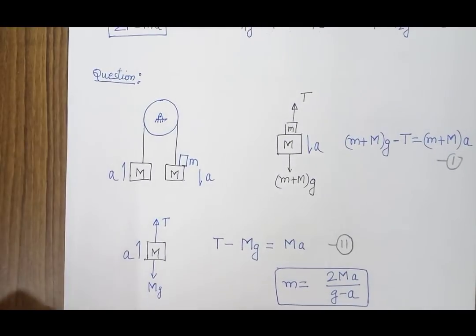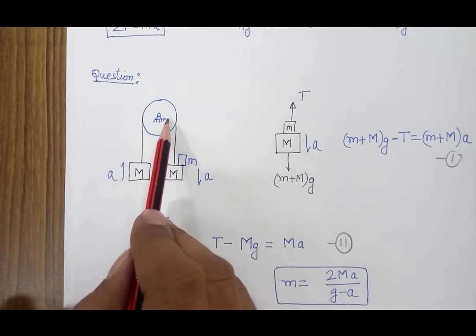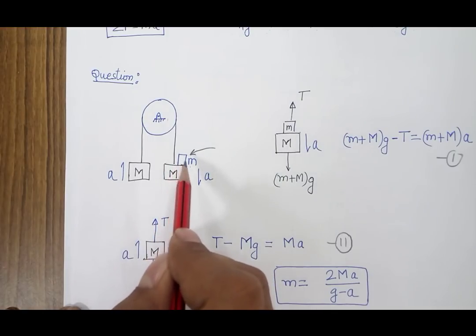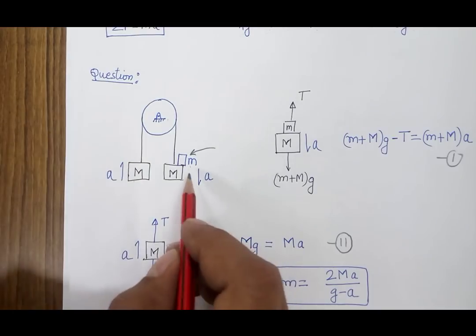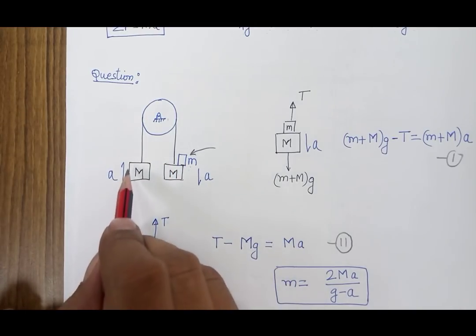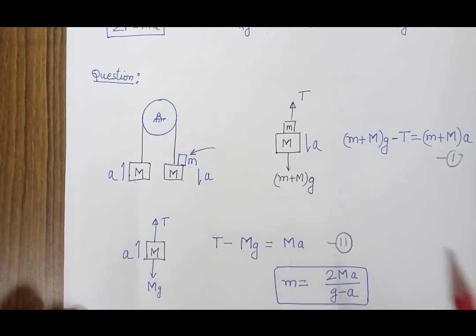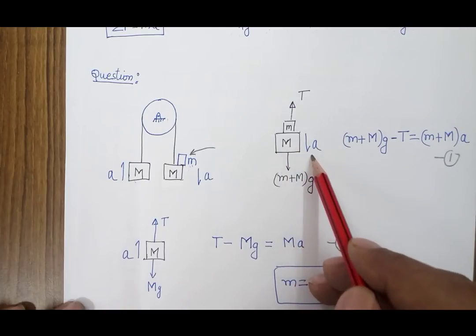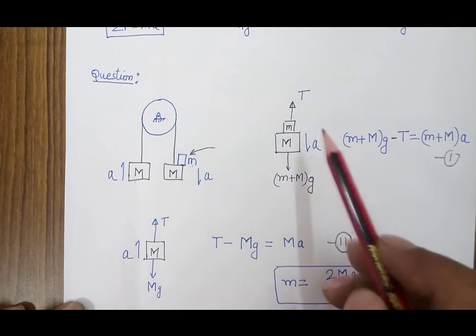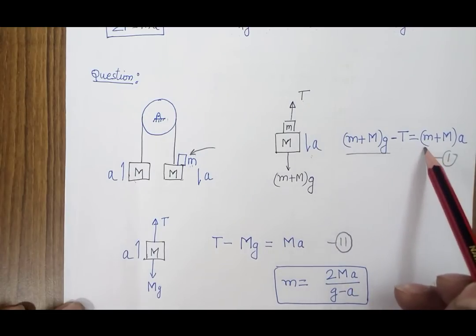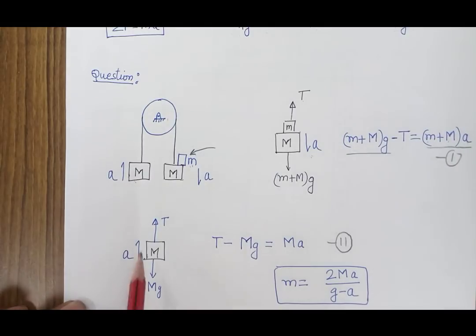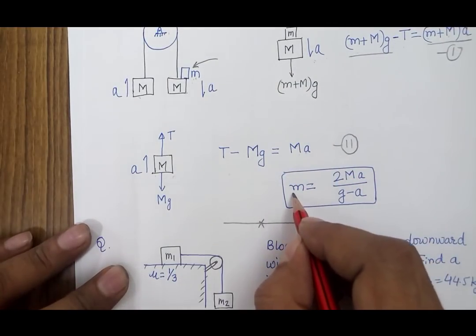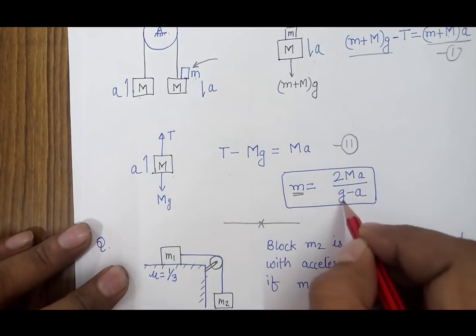Let's take a numerical problem with two equal masses M connected with a pulley, with an additional small mass m added to one side. The heavier side moves downward and the other moves upward. Writing the equation for the heavier side: (M + m)g minus T equals (M + m)a. For the second mass: T minus Mg equals Ma. Solving these two equations gives the value of small m as 2Ma divided by (g minus a).